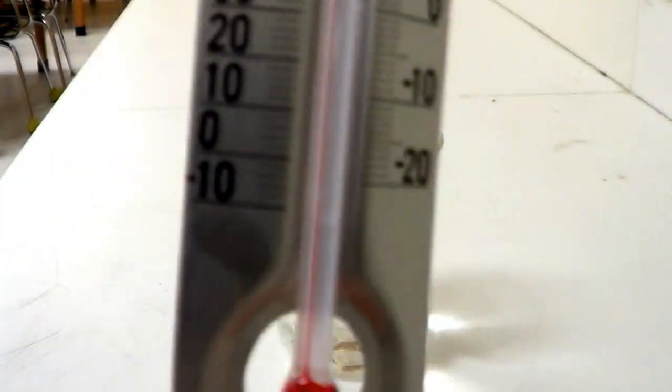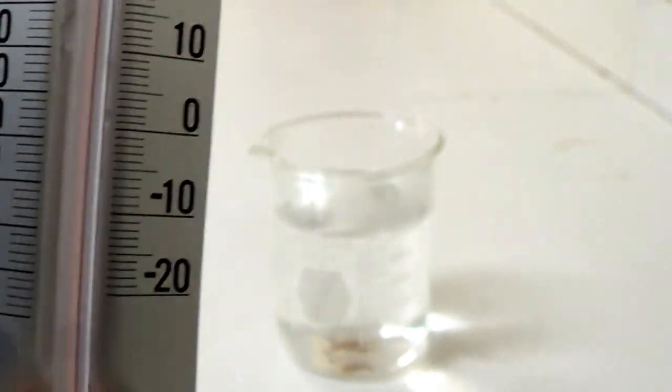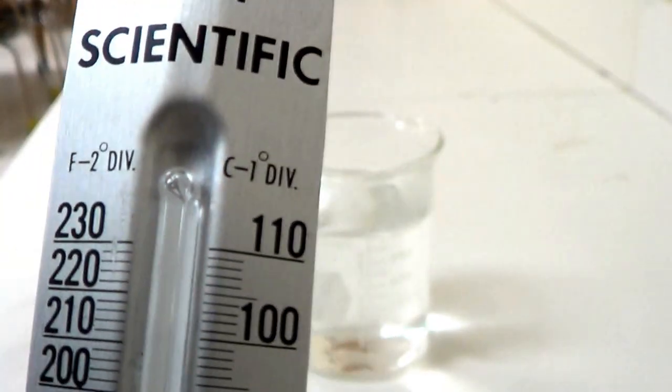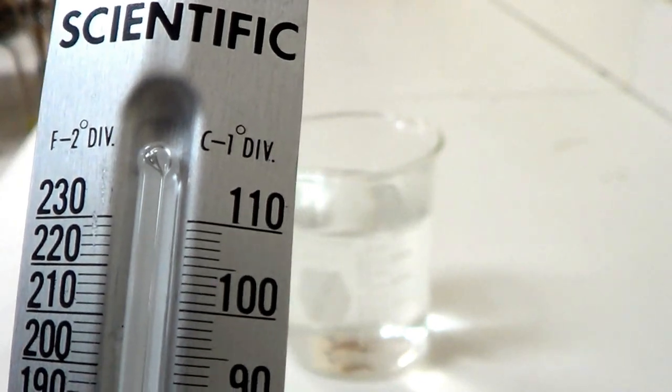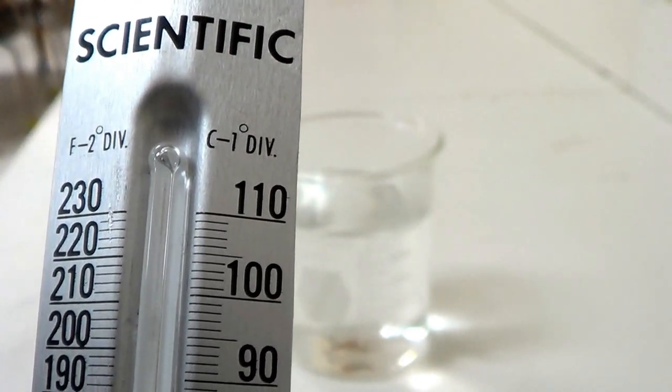So I'm going to bring that in uncomfortably close to the camera. And here you can see that there are two scales on this. And if I go up to the top, you can see that the scale on the left is Fahrenheit and the scale on the right is Celsius.